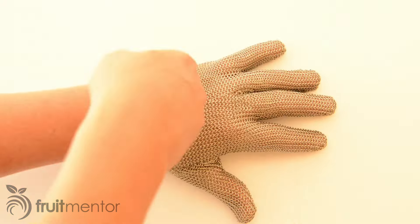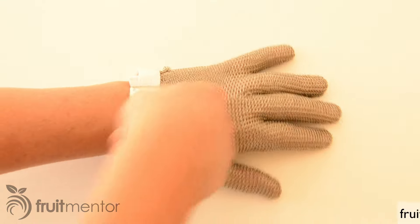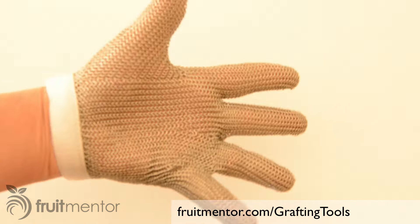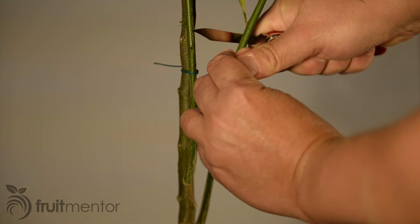Some grafters protect hands with gloves such as these at fruitmentor.com/grafting-tools. A sharp knife can help to avoid slips. First I cut off the top of the rootstock at about a 45 degree angle.